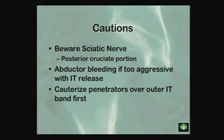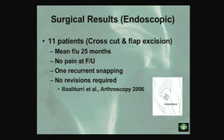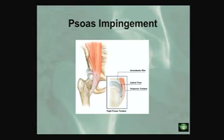Make sure you don't get too aggressive posteriorly and always cauterize all those perforators — that's why I've gone to using the ablator from the start. There's not a lot of history behind this procedure yet; Victor probably has the largest series. I have 45 patients that one of my fellows is currently reviewing, which will hopefully show good results. It's a mix of not only snapping hip but also chronic bursitis.